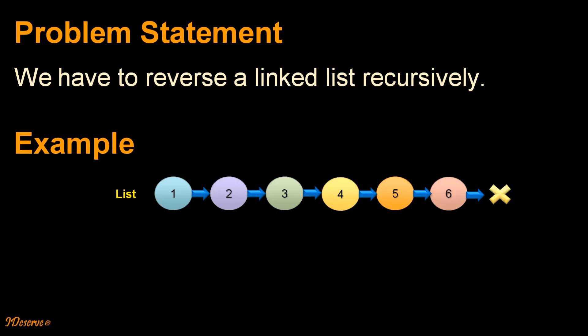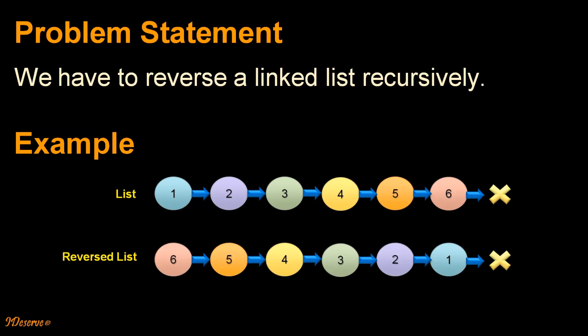We have the linked list as 1, 2, 3, 4, 5, 6, where 1 is the head node and 6 is the tail node. After reversing the linked list, it should look like 6, 5, 4, 3, 2, 1, where 1 becomes the tail node and 6 becomes the head node.